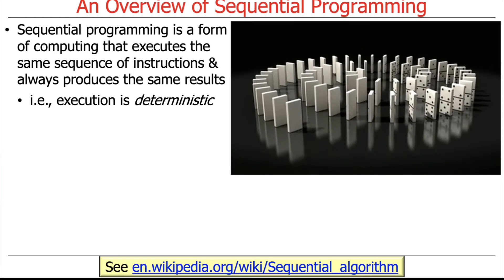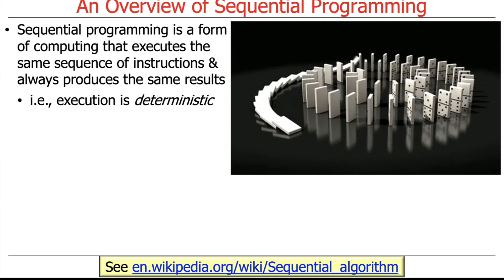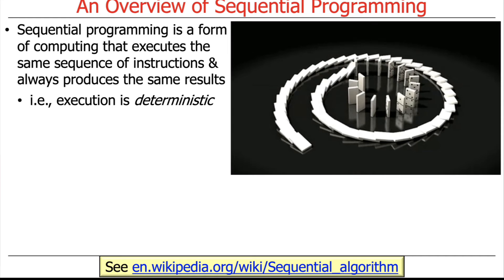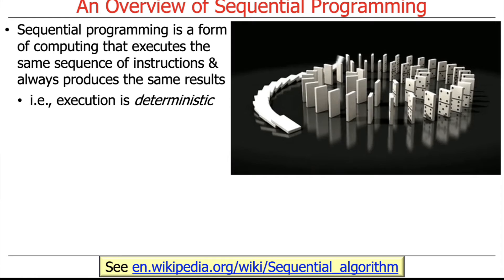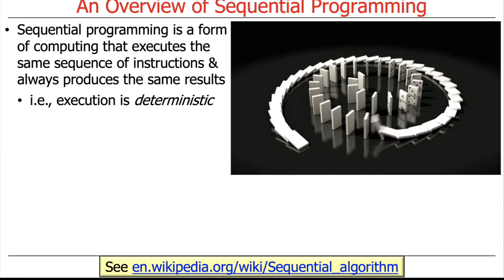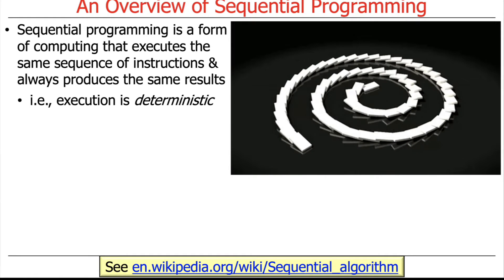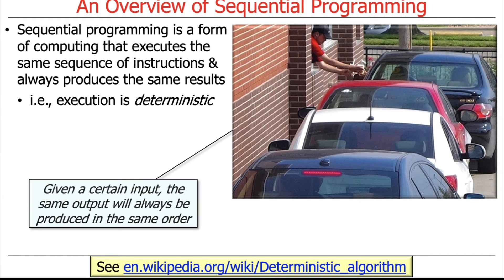So what is sequential programming? It's a form of computing that executes the same sequence of instructions and always produces the same results. That's just a fancy way of saying that the execution is deterministic — meaning that given a certain input, the same output will always be produced in the same order. You can think of it like going through a fast food restaurant's drive-through lane, where each car is serviced in order.